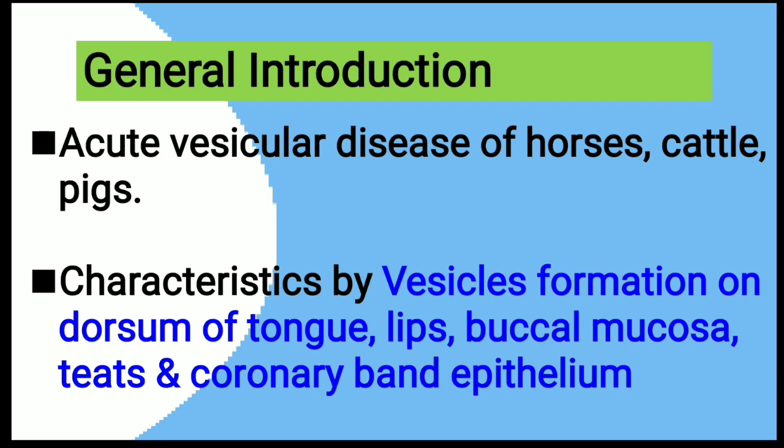This is an acute vesicular disease of horses, cattle, and pigs. It is mainly characterized by vesicle formation on the dorsum of tongue, lips, buccal mucosa, tits, and coronary band epithelium mainly.